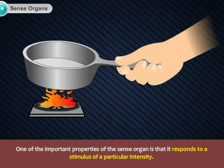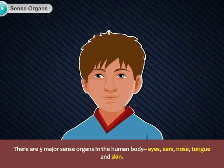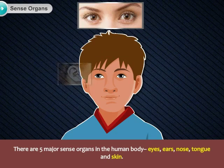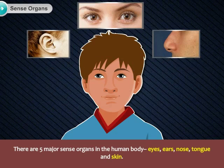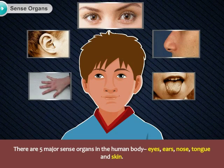One of the important properties of the sense organ is that it responds to a stimulus of particular intensity. There are five major sense organs in the human body: eyes, ears, nose, tongue, and skin.